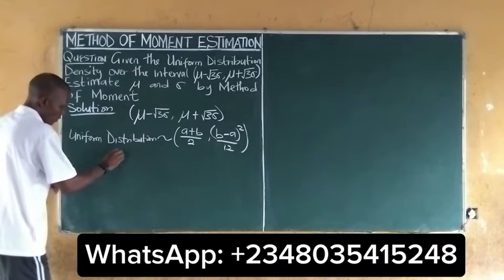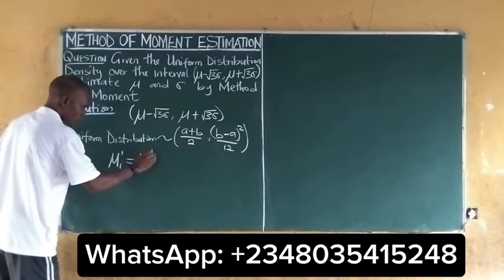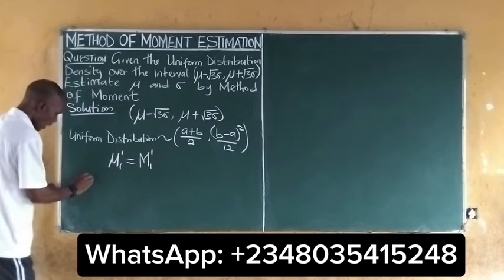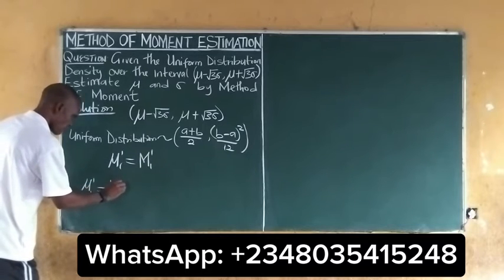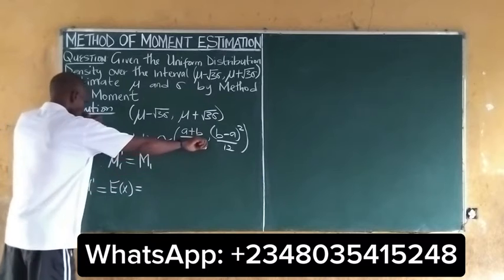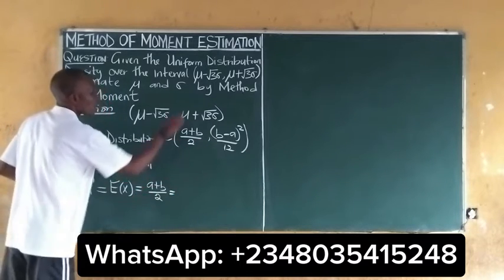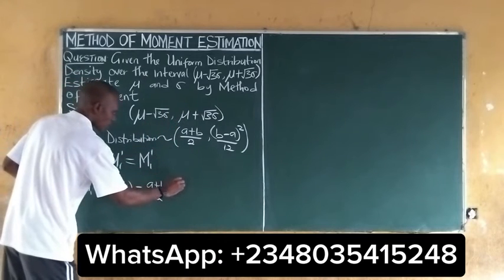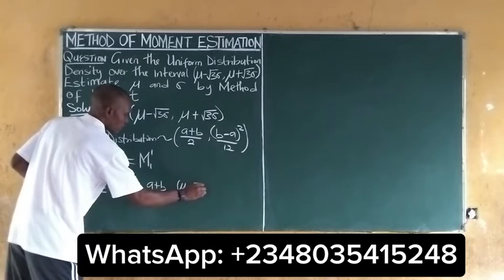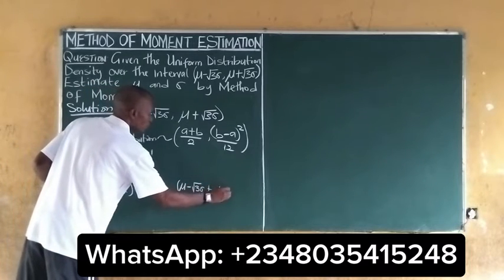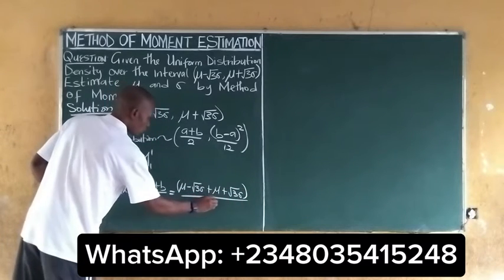For the method of moments, the population mean is always equal to the sample mean. We have our population mean, which is the expected value of x, equal to (a+b)/2. From our interval, this becomes: (mu minus square root of 3 sigma plus mu plus square root of 3 sigma) all over 2.